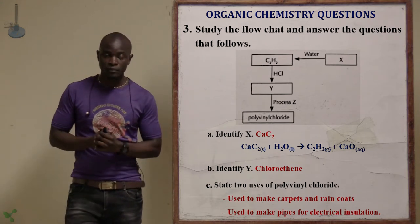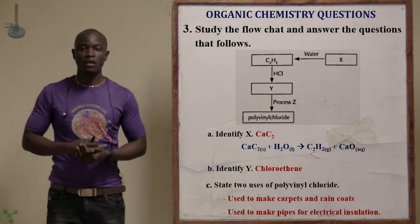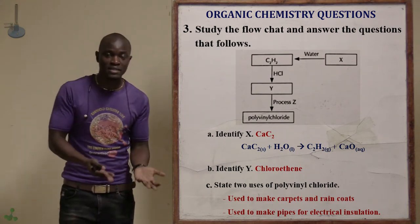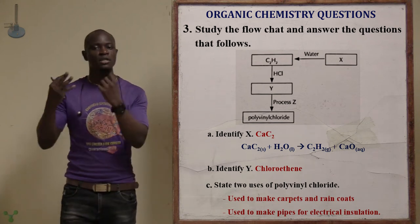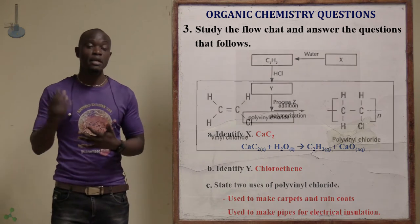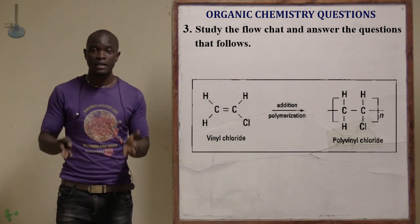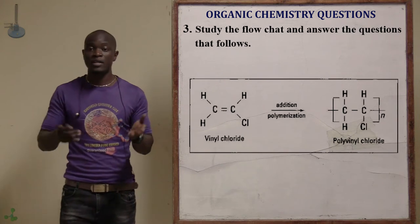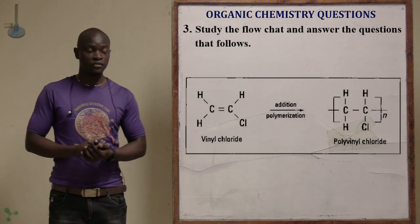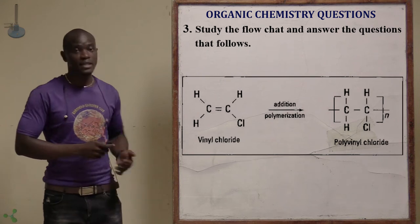State four uses of polyvinyl chloride (PVC). It is used in making plastic substances, carpets, raincoats, insulators for electric cables, and pipes. Basically, most plasticky things use polyvinyl chloride, as well as insulators. This is the structure of polyvinyl chloride, the structure of PVC.